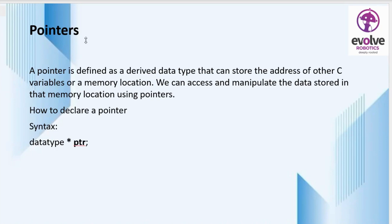In this video, I am going to discuss pointers in C. A pointer is a variable whose value is the address of another variable. A pointer can be used to store the memory address of other variables, functions, or even other pointers. It is defined as a derived data type that can store the address of other C variables or a memory location. We can access and manipulate the data stored in that memory location using pointers.